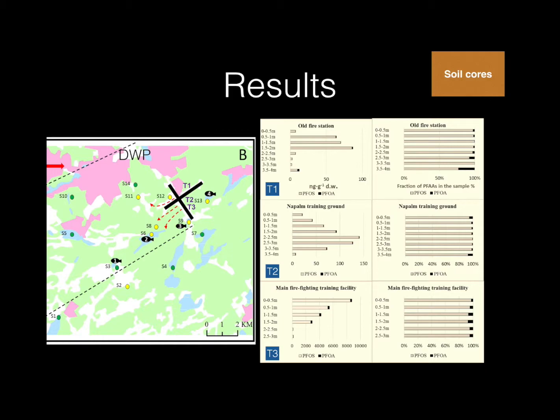In T1 and T2, we see that the concentrations throughout the soil column are varying in T1, but in T2 they are more stable. This might be due to that this site has been used for napalm training ground and firefighting exercises, where the napalm oil could potentially have a stronger sorption of the fluorinated acids and therefore we see a different pattern.